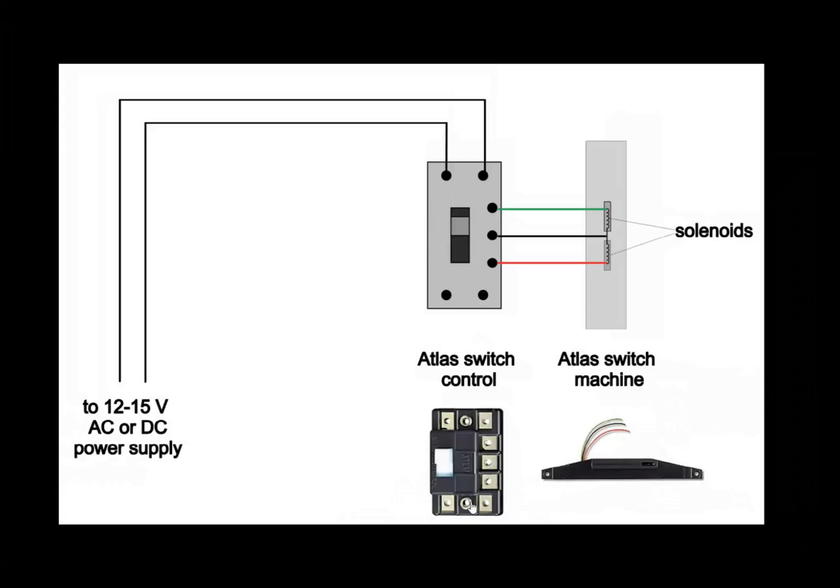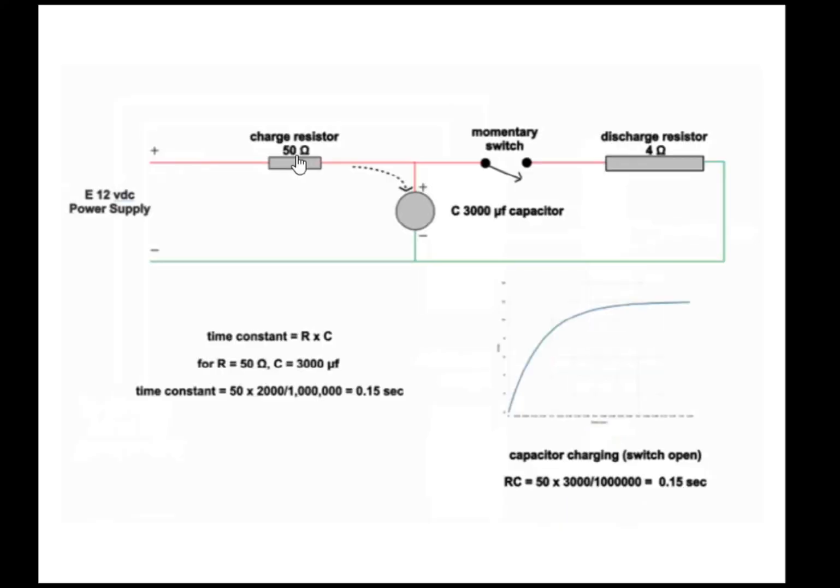So first I want to talk about how a capacitor is charged through a resistor. In my example I've got a 12 volt DC power supply connected through a charge resistor. The capacitor resistance is 50 ohms. The capacitance in my example is a 3000 microfarad capacitor. When the voltage is applied to the positive side of the capacitor, it starts filling up with voltage. Think of it as a cup filling with water.